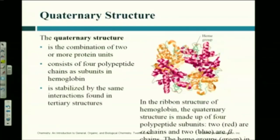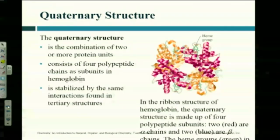The quaternary structure is when you take several tertiary structures and put them together. That is what hemoglobin looks like — these ribbon structures come together first in a tertiary structure, and then multiple subunits combine into a quaternary structure. Hemoglobin is made up of four subpolypeptide units joined together.